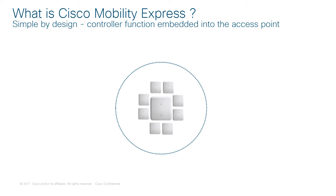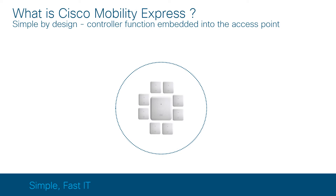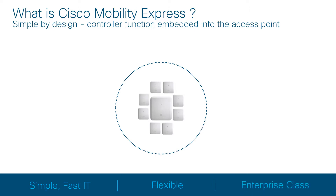Mobility Express is positioned to deliver enterprise-class wireless LAN access for networks of all sizes. The key point to remember with Mobility Express can be summed up in one word: simplicity. Leonardo da Vinci once said that simplicity is the ultimate sophistication, and that is so true here. A small business or a large organization can easily monitor, manage, and troubleshoot their network with no compromise to advanced enterprise features, without needing a wireless network expert or a large IT staff.